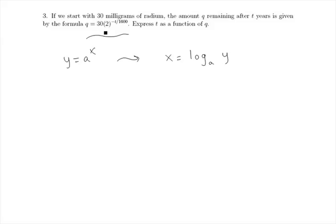Before we even try to use this relationship, it's important to isolate the exponential term. So the first thing we'll do is divide both sides by 30. We get q over 30 equals 2 to the power negative t over 1600.